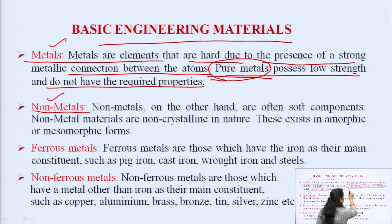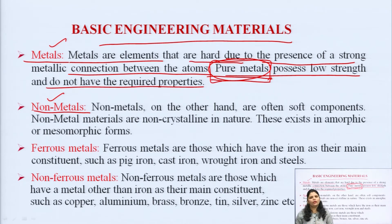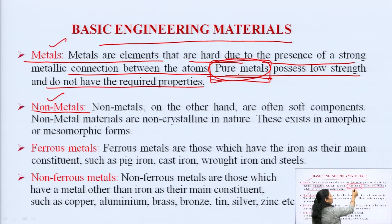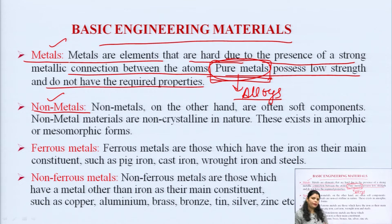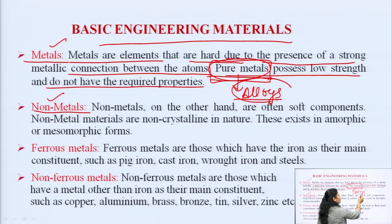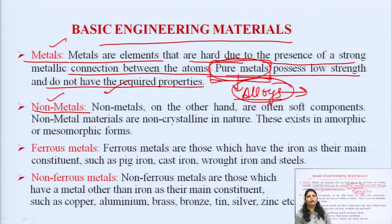How will we use these metals in that case? We will use the combination of two or more metals, or we can use the combination of metal and non-metals by melting or sintering — and that is known as alloys. Alloys will have high strength properties. According to our application, we can combine metals to achieve the properties required. This is about metals.